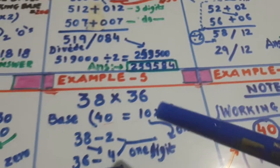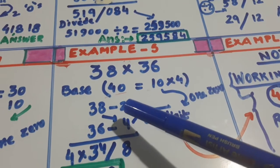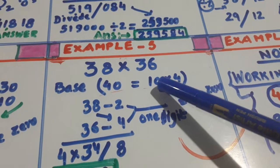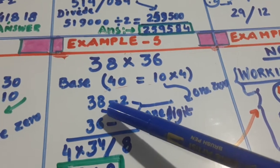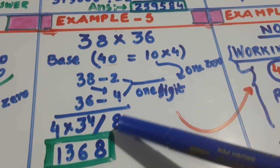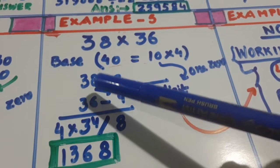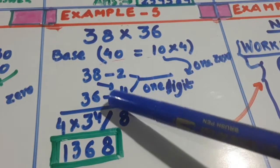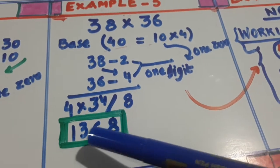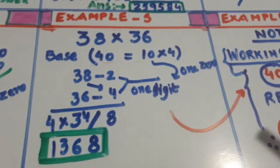Now let us go to this. 38 into 36. Working base is 40. This can be written as 10 into 4. And this is 2 less. 36 is 4 less than 40. Multiply this, becomes 8. Take diagonally, 38 minus 4, 34. Multiply by 4. You get 1368. That is the answer.